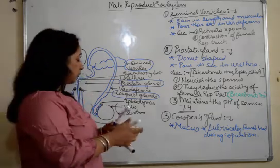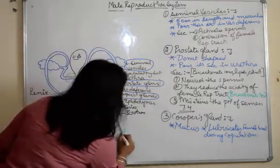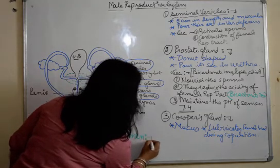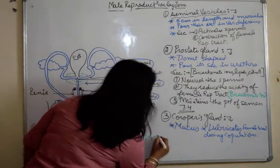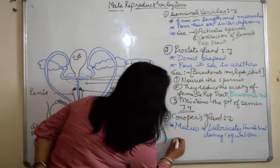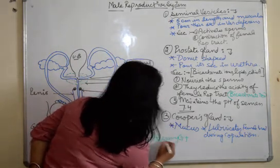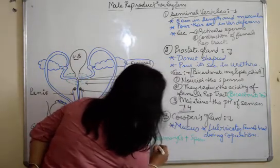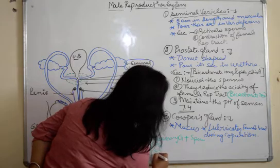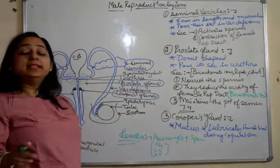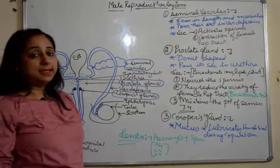Now here I just want to take up semen. What do you mean by semen? If I say what is semen? Semen is secretion of accessory glands plus sperms. If I say accessory glands, it is prostate gland, cowper's gland and seminal vesicles plus sperms. They form semen which is passed out from the male's body.